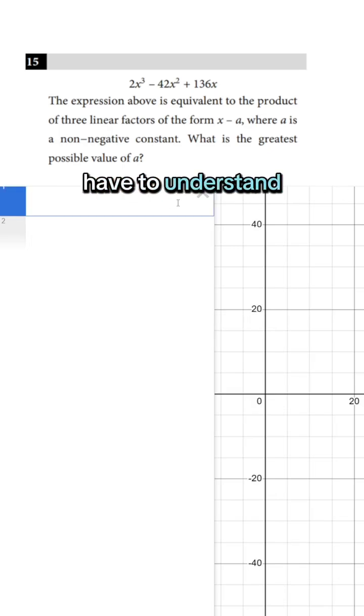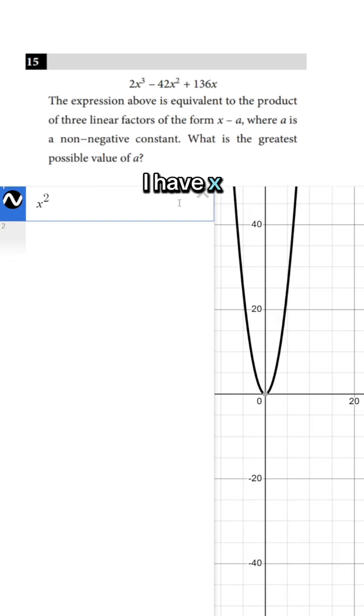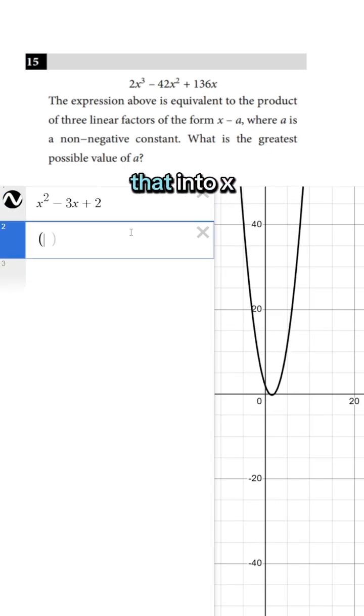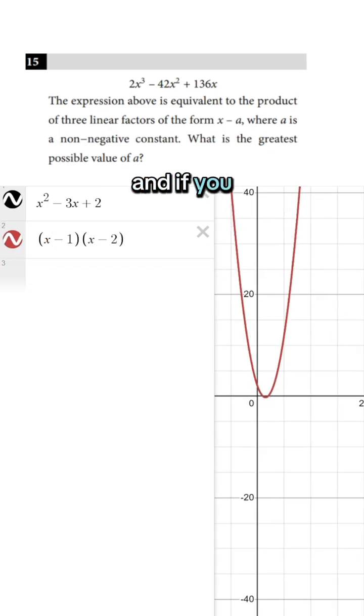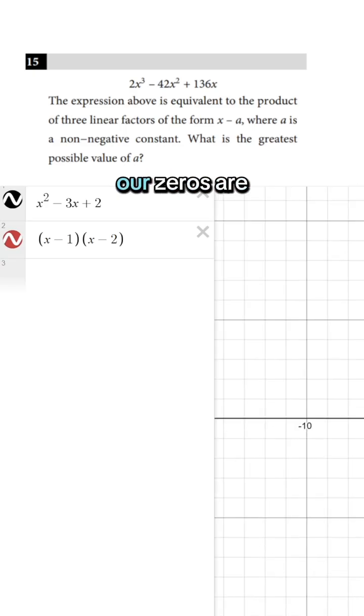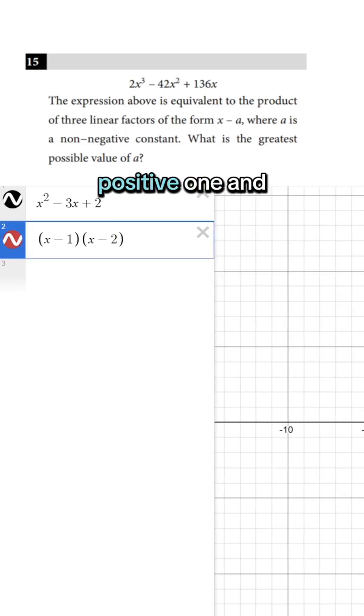So what we have to understand is that, for example, if I have x squared minus 3x plus 2, I can factor that into x minus 1 times x minus 2. And if you look, that is because our zeros are going to be positive 1 and positive 2. Basically, when we write it as a factor, we just flip the sign.